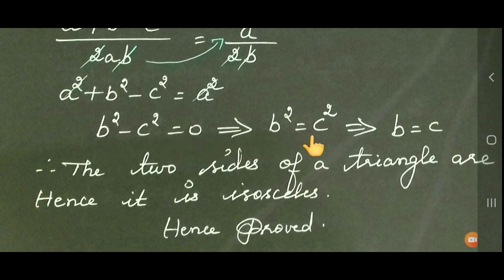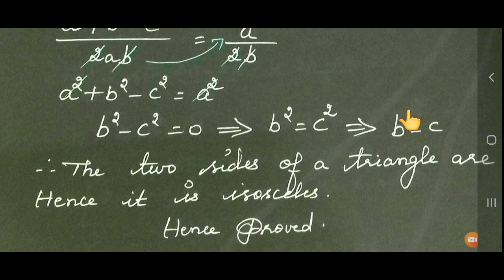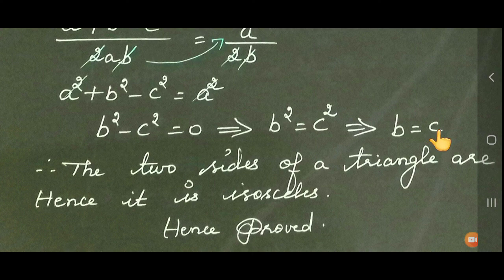Cross-multiplying, b times (A square plus B square minus C square) equals a times AB, so A square plus B square minus C square equals A square. Therefore B square minus C square equals 0, which gives B square equals C square, implying b equals c. Since all are lengths, b equals c. We have proved two sides of the triangle are equal, hence the triangle is isosceles. Hence proved. Thank you, children.